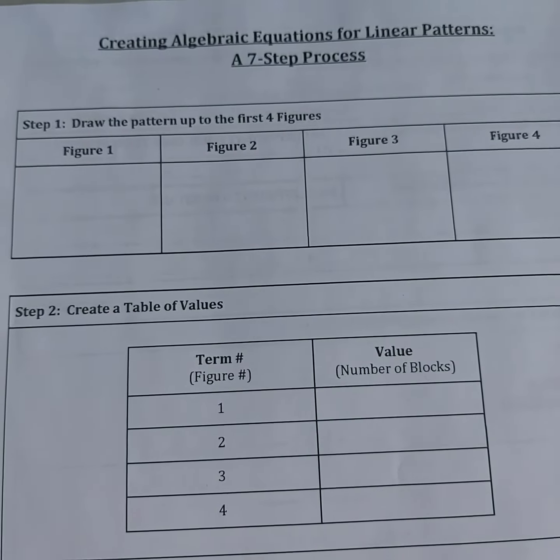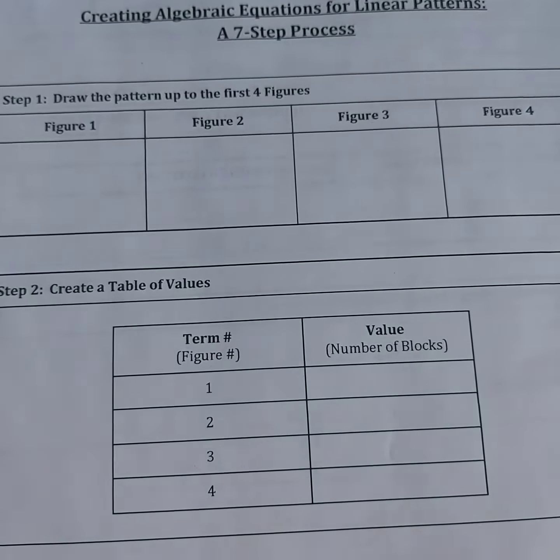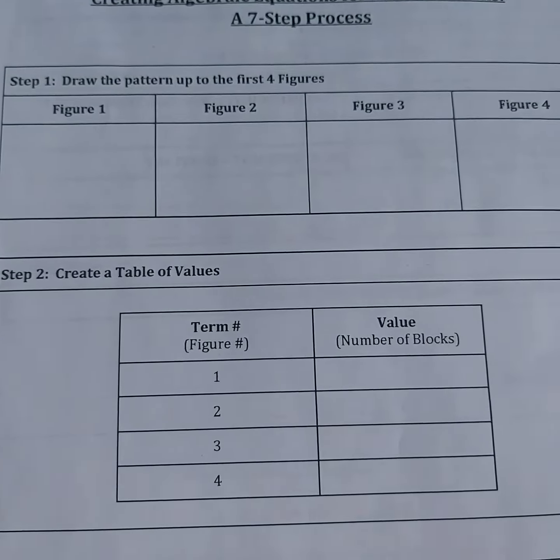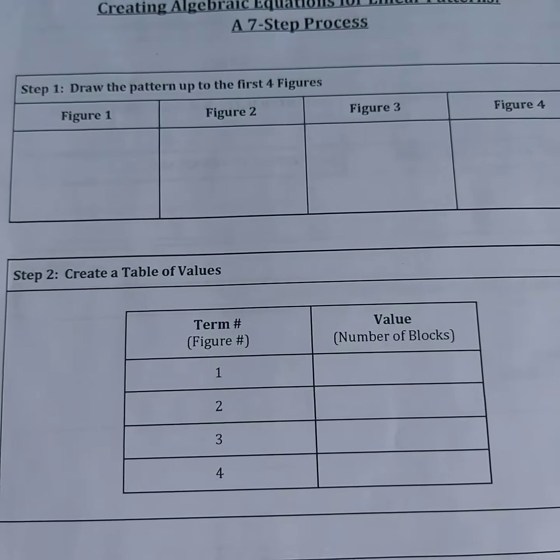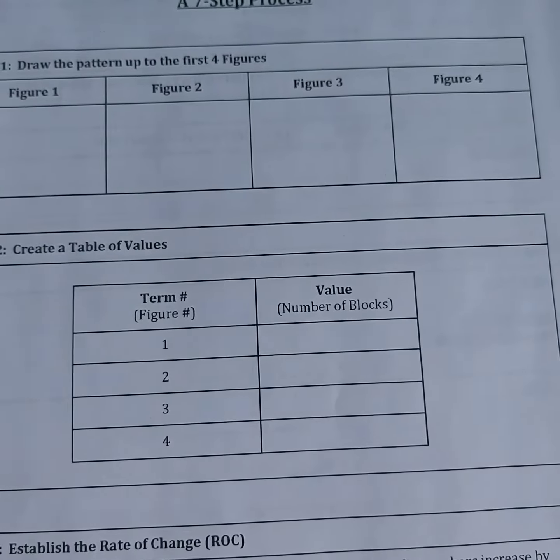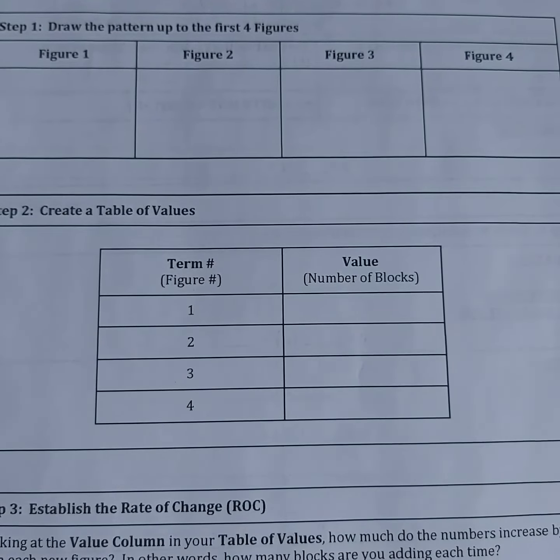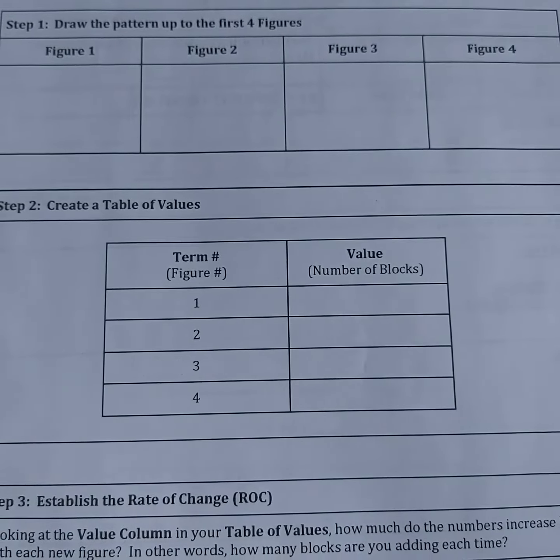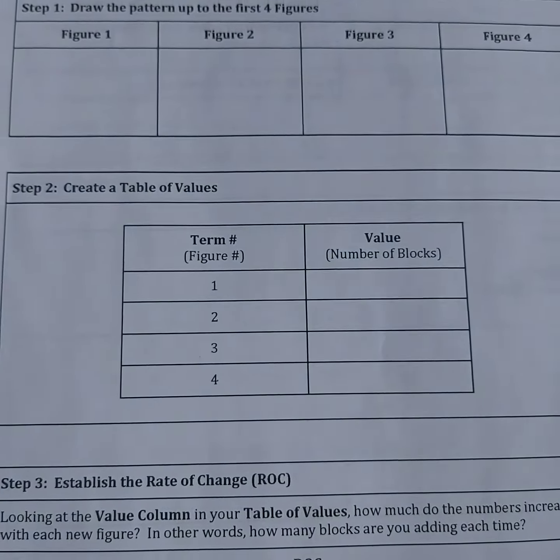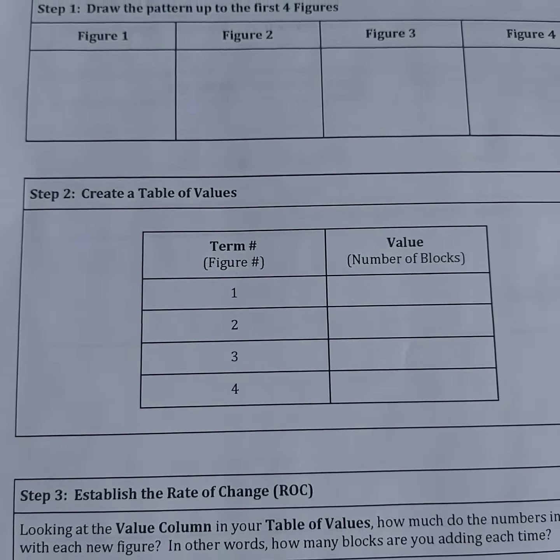To build such a growing pattern way down the line when we don't want to actually draw that pattern out a thousand times. The way that we do that is we look at the pattern, we identify certain elements of it, and we basically create an algebraic equation that can predict any possible term that we would come across down the road.